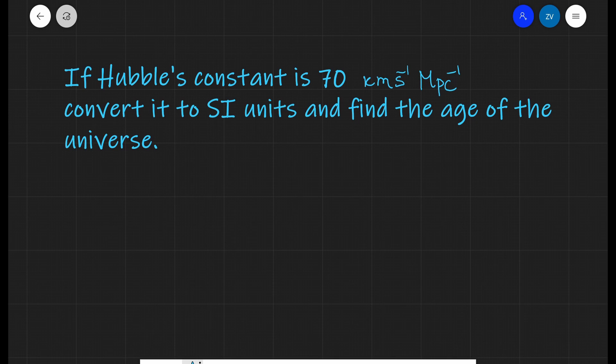Today we're going to be looking at a follow-up video from my Hubble's law video in which we're going to be calculating the age of the universe itself. Additionally, in order to do so, we are going to learn how to convert Hubble's constant from kilometers per second per megaparsec to SI units.